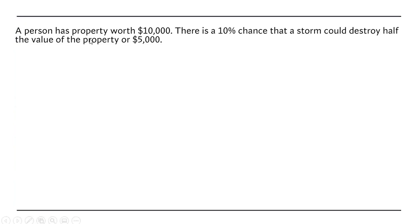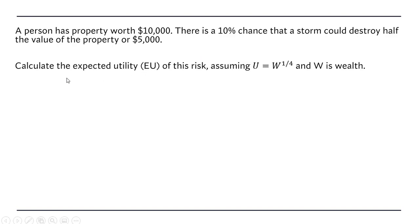A person has property worth $10,000. There's a 10% chance that a storm could destroy half the value of this property, leaving a person with only $5,000. We want to calculate the expected utility of this risk, assuming the person's utility function looks like this, where w equals wealth.